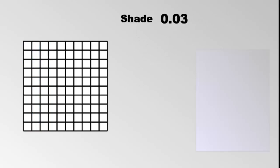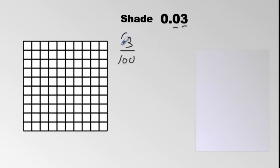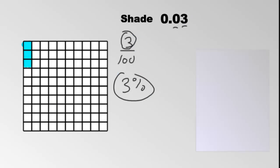How about 0.03? There's no trick here — just read the place value. That's 3 out of 100 because of the place values. And 3 out of 100 simply means color 3 things out of 100. What is this as a percentage? 3%. So we've got a percent, a fraction, and a decimal.